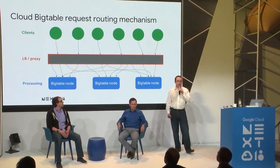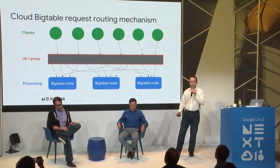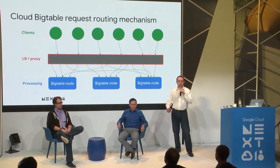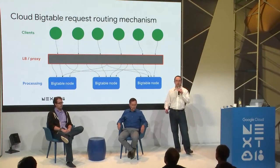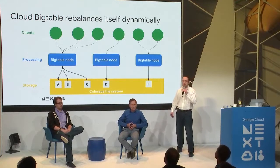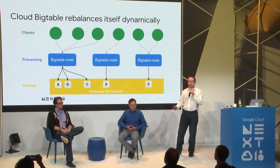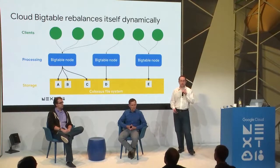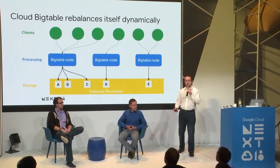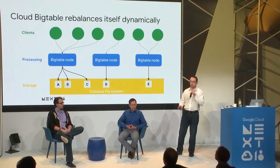Let's talk about request routing in Bigtable. Clients connect to a single endpoint — the load balancing proxy layer — which forwards requests to the Bigtable nodes serving the data. Bigtable itself is stateless; it stores all data in Colossus, our distributed file system. A Bigtable node manages data without holding onto it directly. Nodes have exclusive read-write access to sections of a table for atomicity — every row is exclusively managed by at most one node.